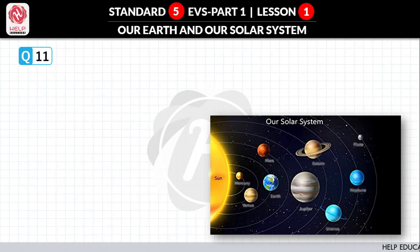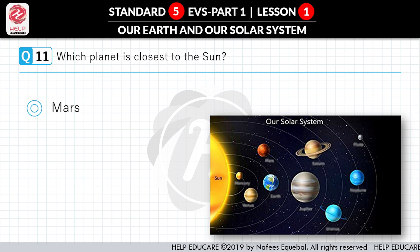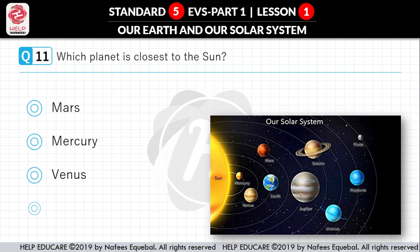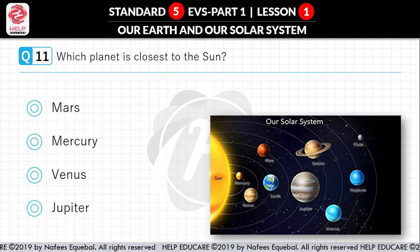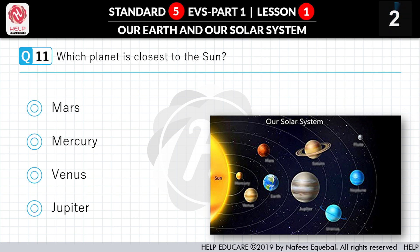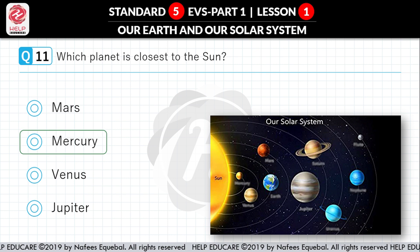Question No. 11: Which planet is closest to the Sun? First option: Mars. Second option: Mercury. Third option: Venus. Fourth option: Jupiter. Correct answer is Mercury.